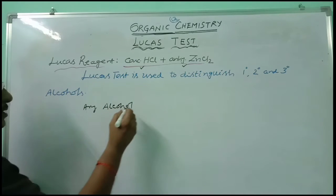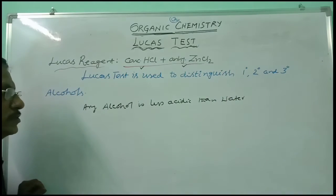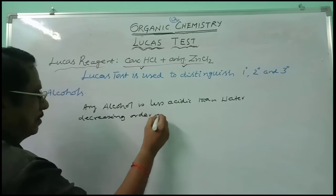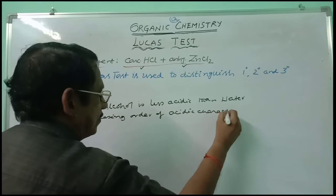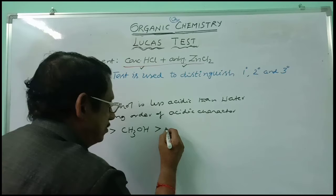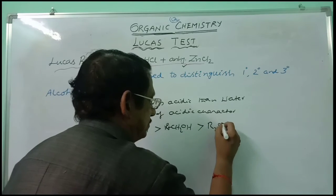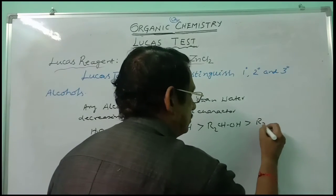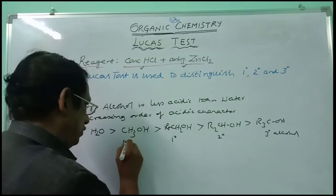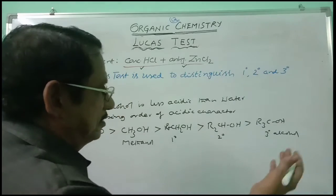Any alcohol is less acidic than water. This is the fact. The decreasing order of acidic character of alcohols is: water > methyl alcohol > primary alcohol (RCH₂OH) > secondary alcohol > tertiary alcohol. So, out of all these alcohols, methyl alcohol and primary alcohol are more acidic than secondary and tertiary alcohols.